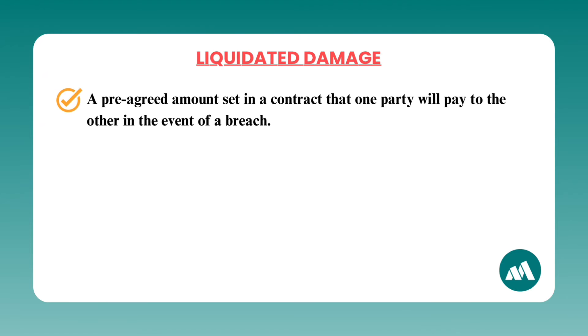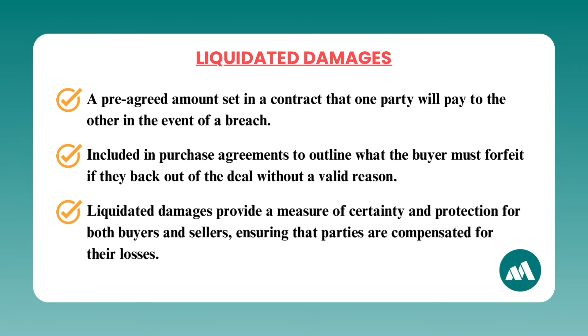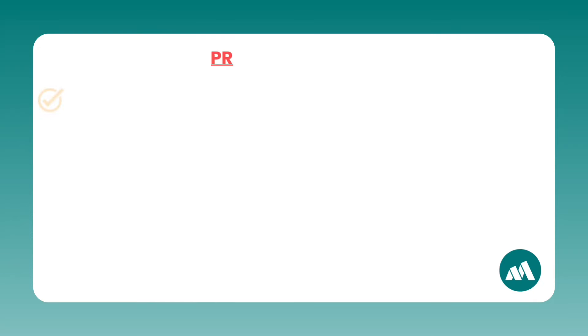Number fifteen: liquidated damages. Liquidated damages are a pre-arranged amount set in a contract that one party will pay to the other in the event of a breach. In real estate, these are often included in purchase agreements to outline what the buyer must forfeit if they back out of the deal without a valid reason. They provide a measure of certainty and protection for both buyers and sellers. Think of liquid as money readily accessible — just like a buyer's earnest money deposit is held in an escrow account.